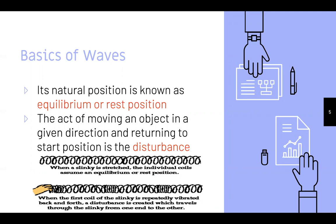You've probably heard of 'rest' before; equilibrium is similar — think of the word 'equal.' The act of moving an object in a given direction and returning it to its start position is the disturbance. Looking at a slinky, for instance: when a slinky is stretched, the individual coils assume an equilibrium or rest position.